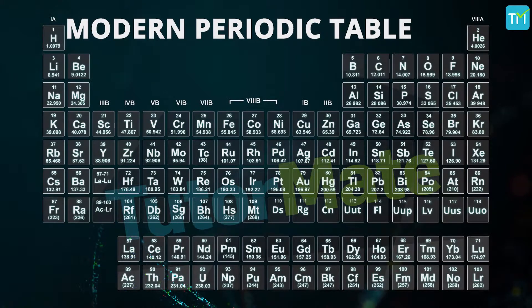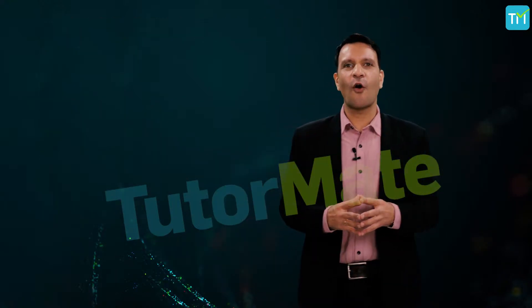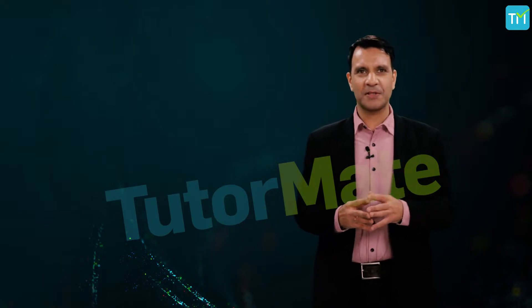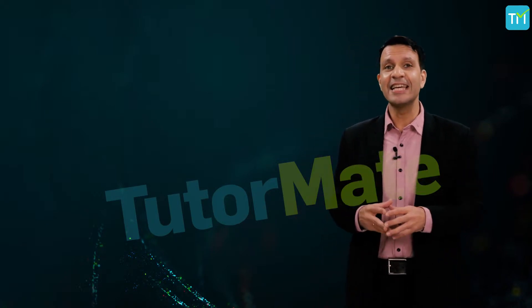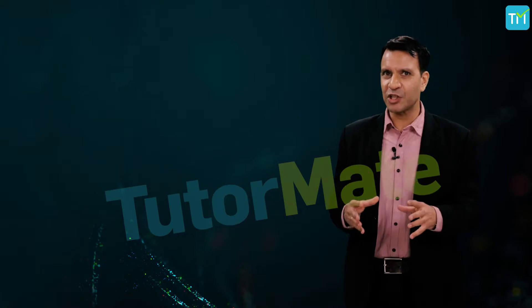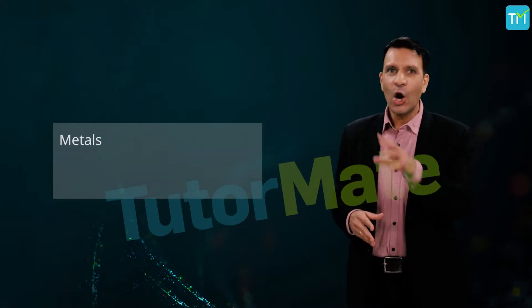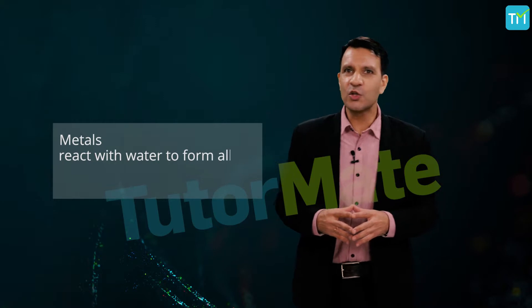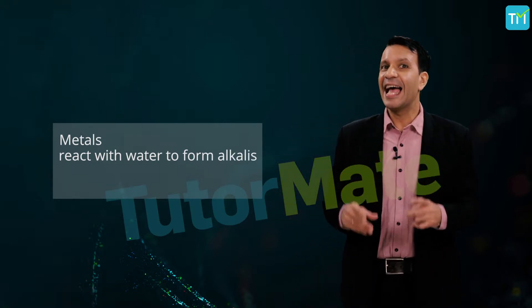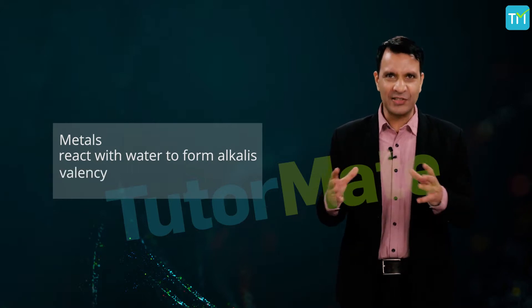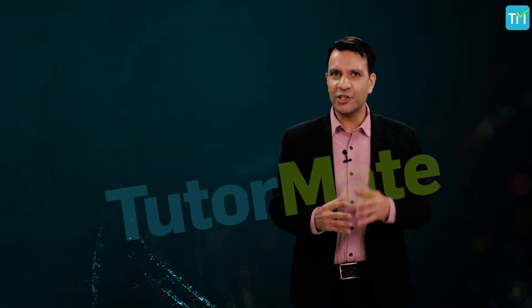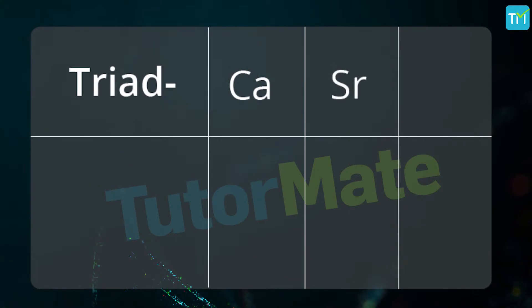If you compare the triads with their current position in the periodic table, all three elements belong to the same group. The three elements that formed a triad exhibited similar properties — in this case, lithium, sodium, and potassium are all metals. Secondly, all of them react with water to form alkalis and hydrogen gas. Lastly, they all have a valency of one. Calcium, strontium, and barium is an example of another triad that also exhibits similar properties.